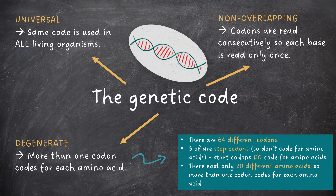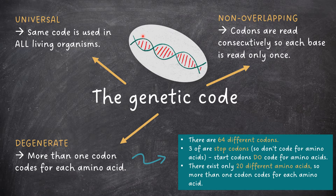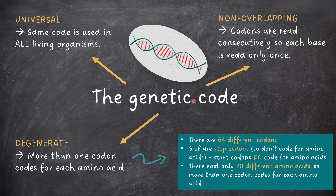The specification wants us to know three key facts about the genetic code. First, the genetic code is universal, meaning that the same code is used in all living organisms — so whether you're looking at the DNA in a bacterium, a human cheek cell, or the cell of an insect, they all have the same genetic code. The genetic code is also non-overlapping, because codons are read consecutively, so each base is read only once. And finally, the genetic code is degenerate, which means that more than one codon codes for each amino acid.